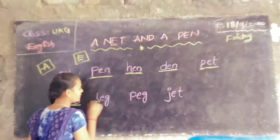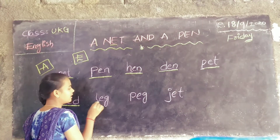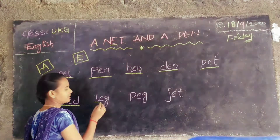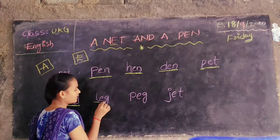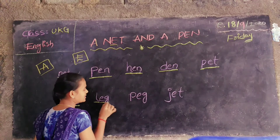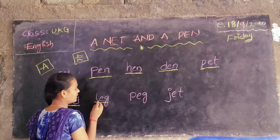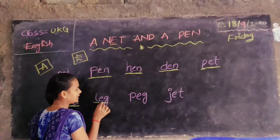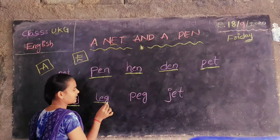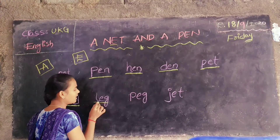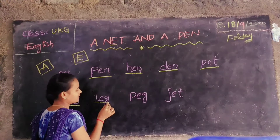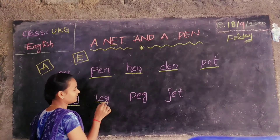Next: the sound of L is L. Next E sound? E. G sound? G. L-E-G. Leg. L-E-G. Leg.